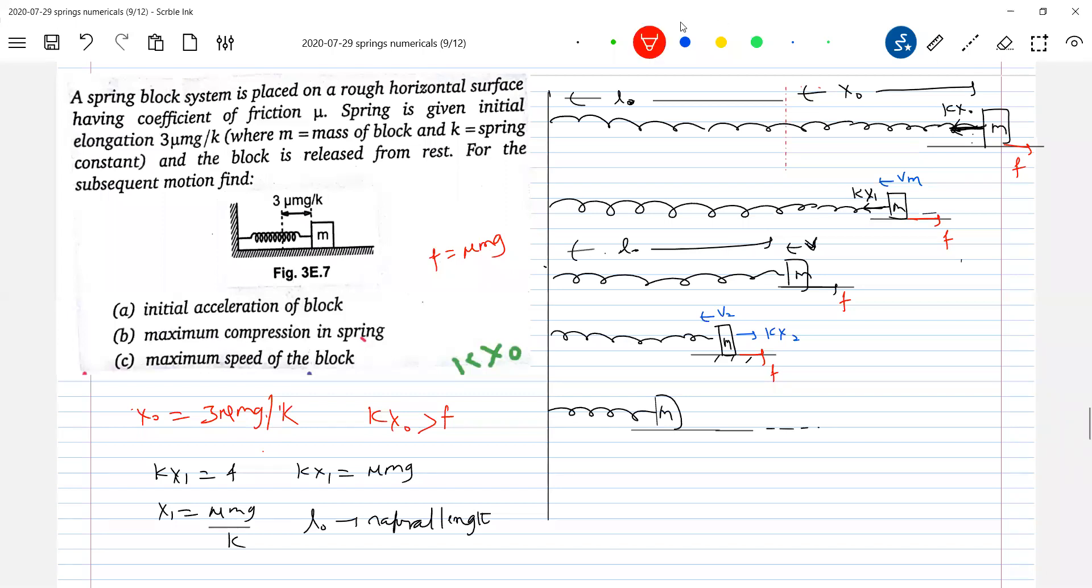So now what do you mean by compression? I should measure from here. Look at this. Shall I call this as compression finally? Maximum compression. So initial acceleration of the block, this is A0. Maximum compression, maximum speed of the block. This is what maximum speed. Maximum compression in the spring. How to find out all these things? This is about the basic diagram.